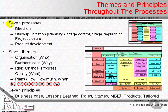The seven processes divide into direction, startup, initiation, stage control, product delivery, stage boundary, and project closure.